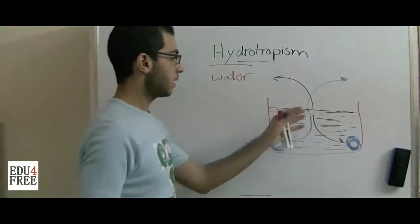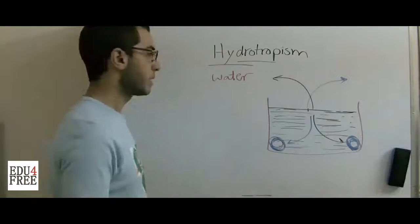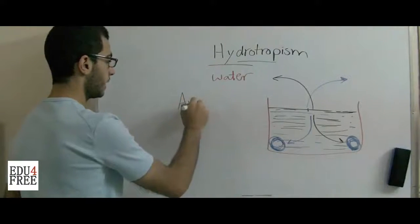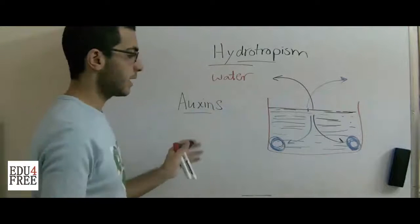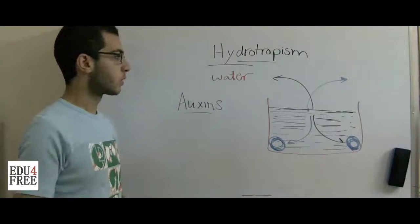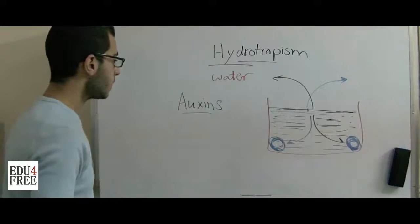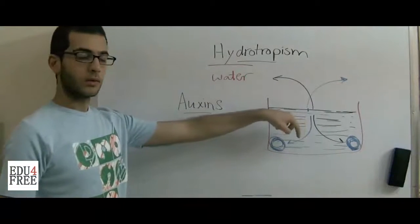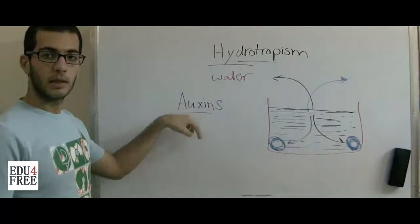So this curvature or tropism is caused due to the auxins or the plant hormones, just the same case as in phototropism or geotropism. For the link for phototropism click here, and for the link for geotropism click here.